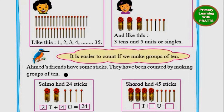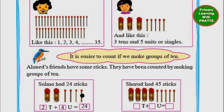Ahmad's friends have some sticks. They have been counted by making groups of 10. Salma had 24 sticks. They are telling us Salma has 24 sticks. In pictures: 1 group of 10, 2 groups of 10 — that's 2 tenths — and then 4 sticks, which are 4 units. So 2 tenths plus 4 units is equal to 24.